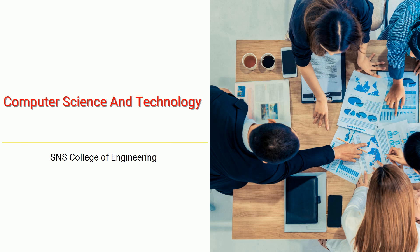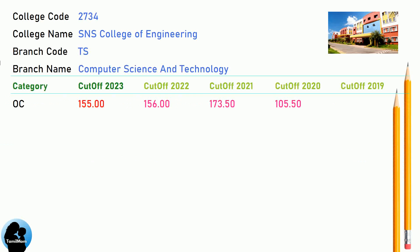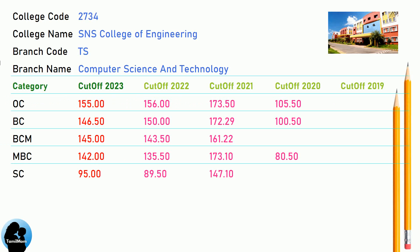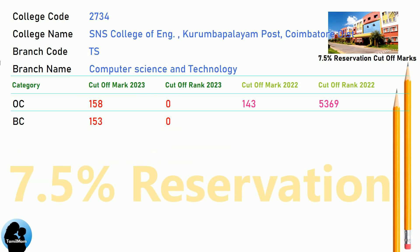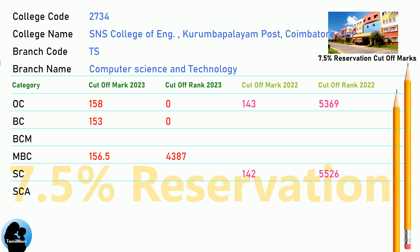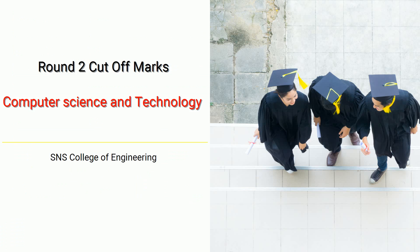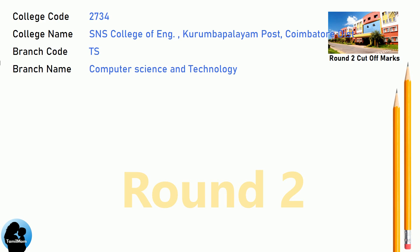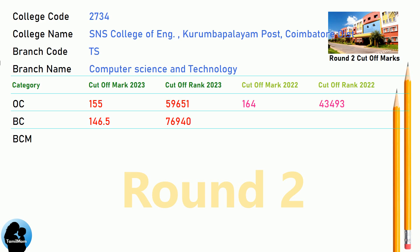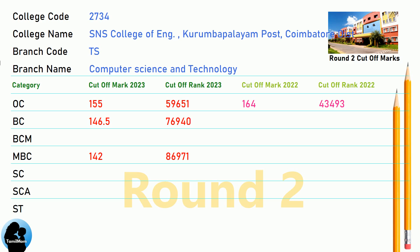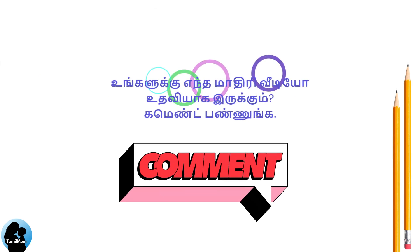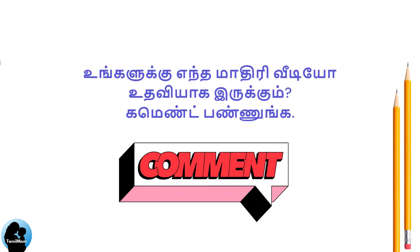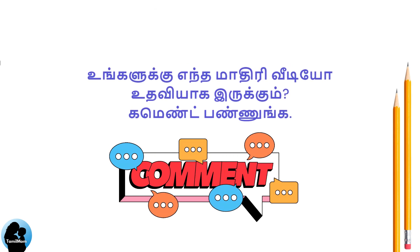DNA Cut-off for ACNS College of Engineering in Computer Science and Technology. DNA 7.5 Reservation Cut-off for ACNS College of Engineering in Computer Science and Technology. DNA Round 1 Cut-off for ACNS College of Engineering in Computer Science and Technology. Thank you.